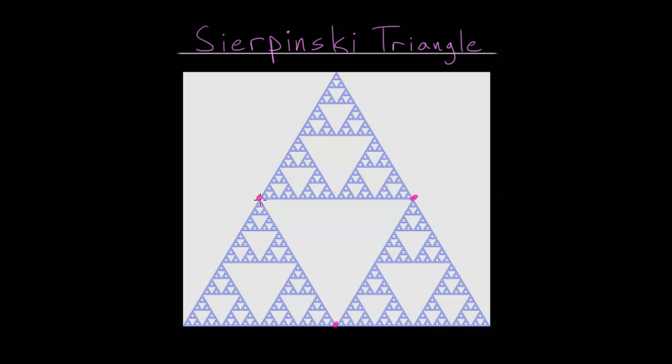And forming new equilateral triangles by connecting those midpoints to each other. And then you will have these four equilateral triangles: one, two, three, four. And the middle one of these is then removed.